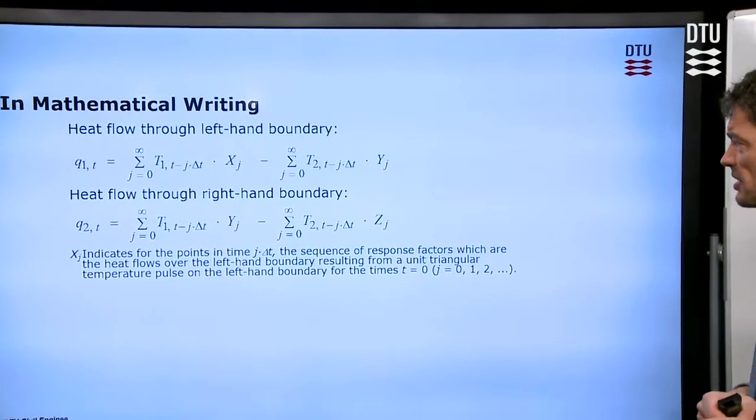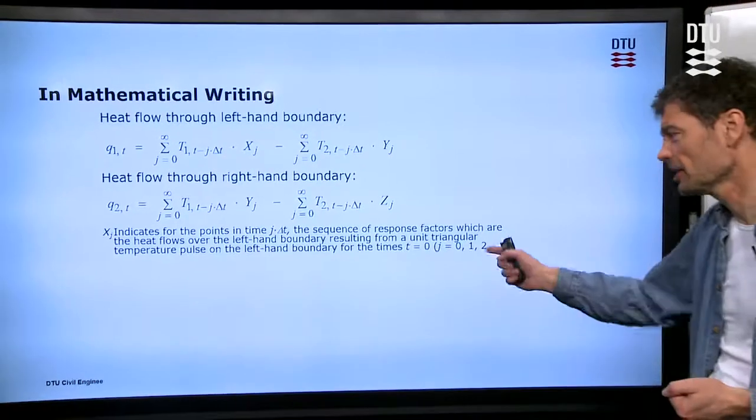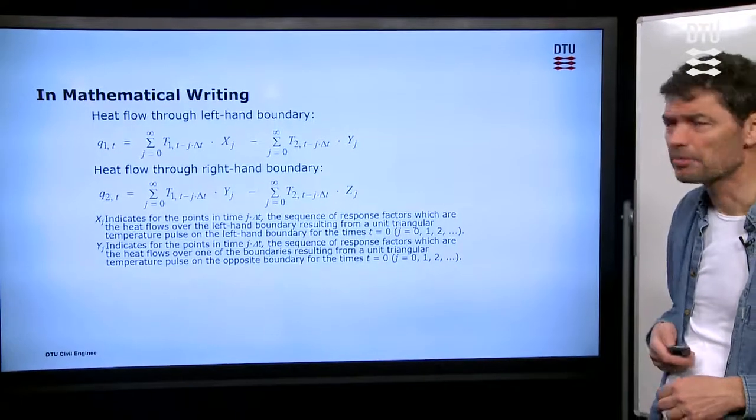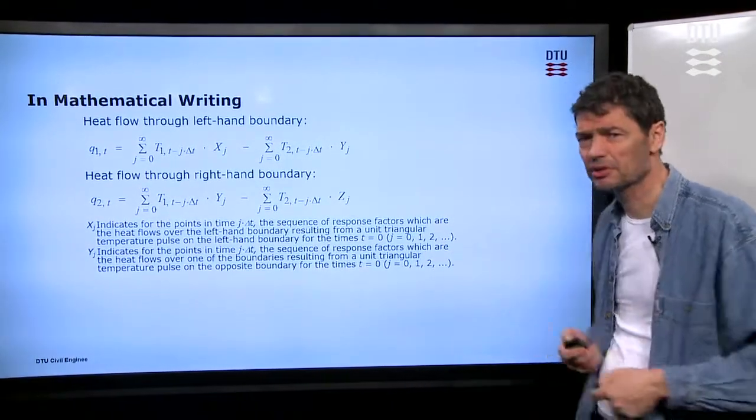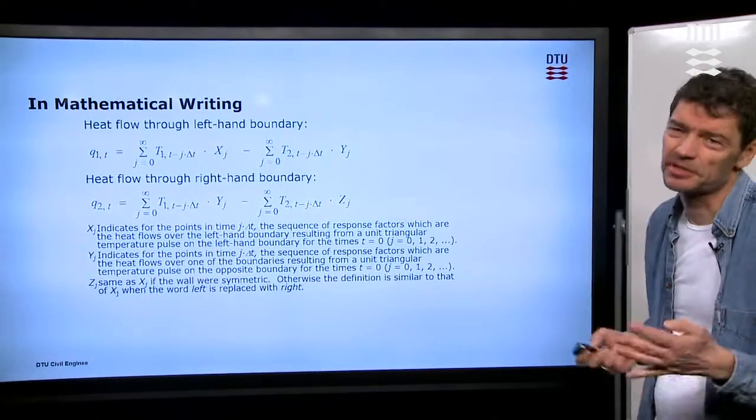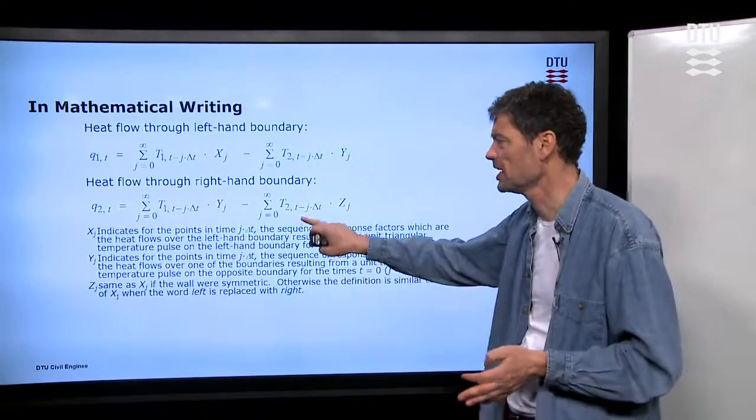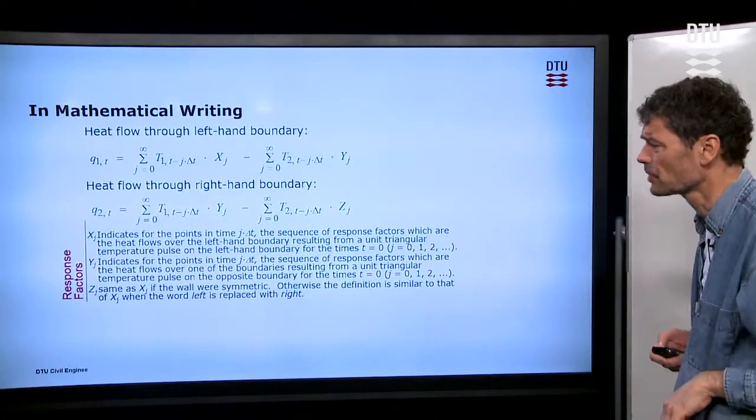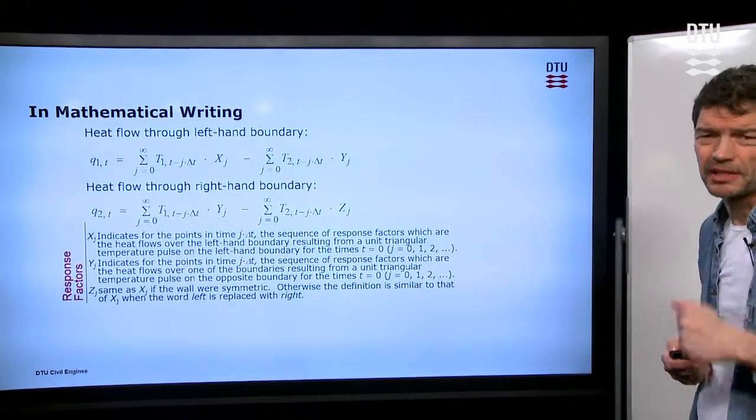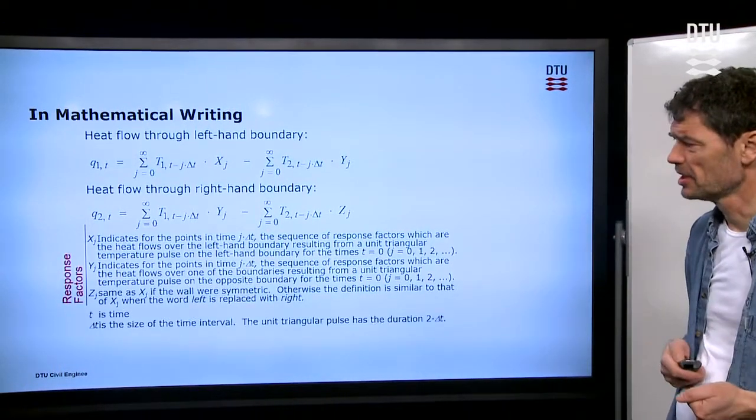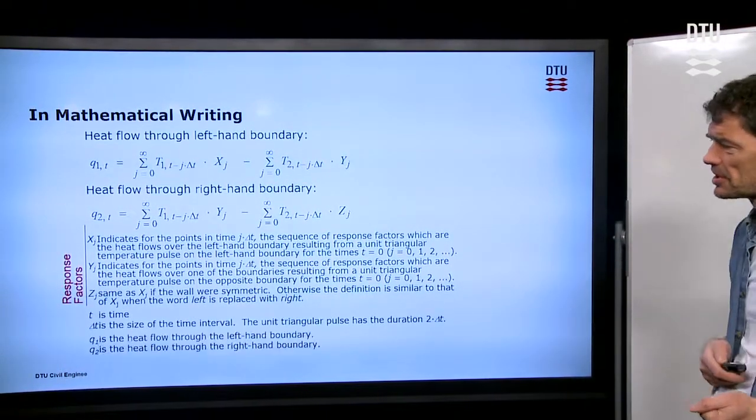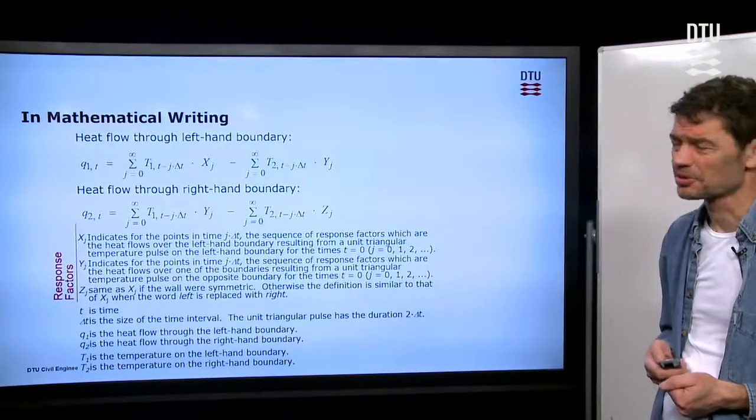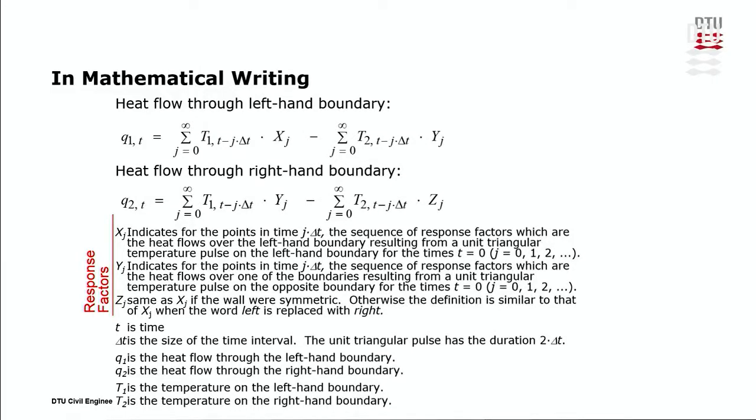So, we should have the X factors counted back in time and number of hours, and remember those. Y factors are needed as well for the cross-going influences. And then we have, of course, the Z factors, which are quite similar to the X factors, on either the left-hand side or the right-hand side of the wall. Those are our response factors, which are the factors that have given name to this method. T, of course, is time. Q are the heat fluxes.